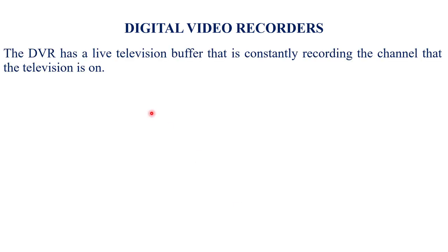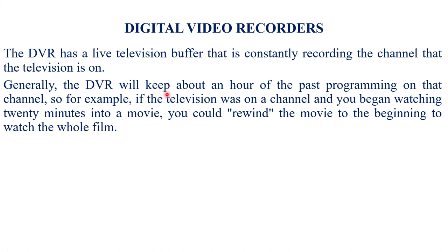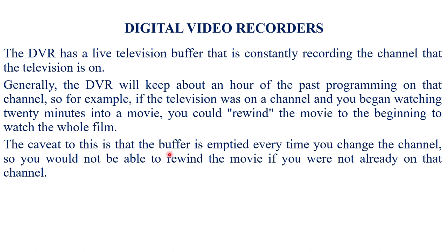The DVR has a live television buffer that constantly records the channel the television is on. Generally, the DVR keeps about an hour of past programming on that channel. For example, if you begin watching 20 minutes into a movie, you could rewind to the beginning to watch the whole film. However, the buffer is emptied every time you change the channel, so you would not be able to rewind if you were not already on that channel.